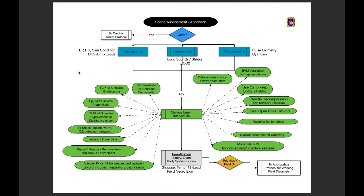You'll move right through that blue diamond and now you're into CVO. We need to assess circulation through BP, heart rate, skin condition, and EKG. We need to assess ventilation - that may include lung sounds, a check for stridor, maybe capnography. We need to assess oxygenation - checking for cyanosis and pulse oximetry. CVO happens first before any emergent interventions, but it can happen concurrently - you can delegate and gather all that basic CVO assessment simultaneously.